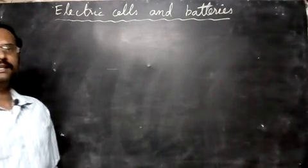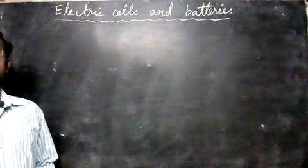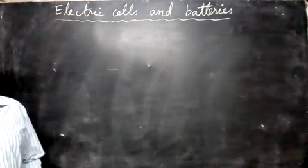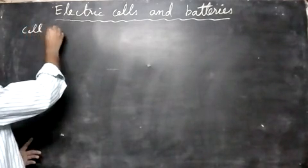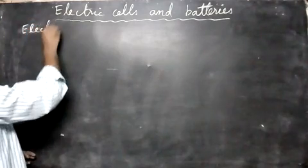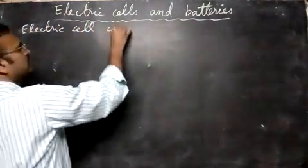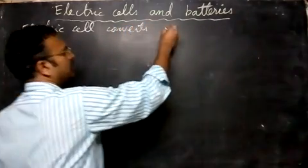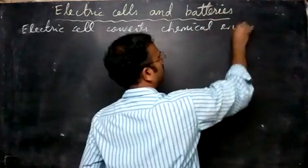Let us now study about electrical cells and batteries. A cell is a device which converts chemical energy into electrical energy. An electric cell converts chemical energy into electrical energy.